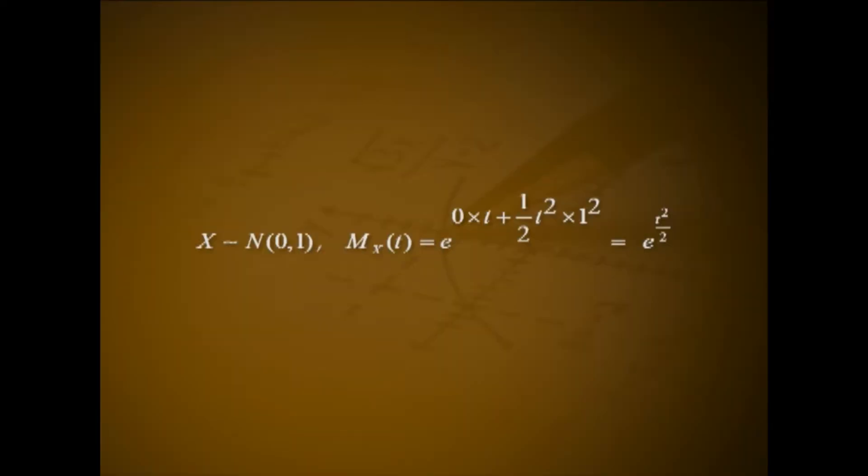When x follows normal(μ, σ), we have M_x(t) equal to e raised to μt plus 1/2 into t² σ². Hence, for a random variable x following normal(0,1), M_x(t) equal to e raised to 0·t plus 1/2 into t² into 1², that is equal to e raised to t² divided by 2.